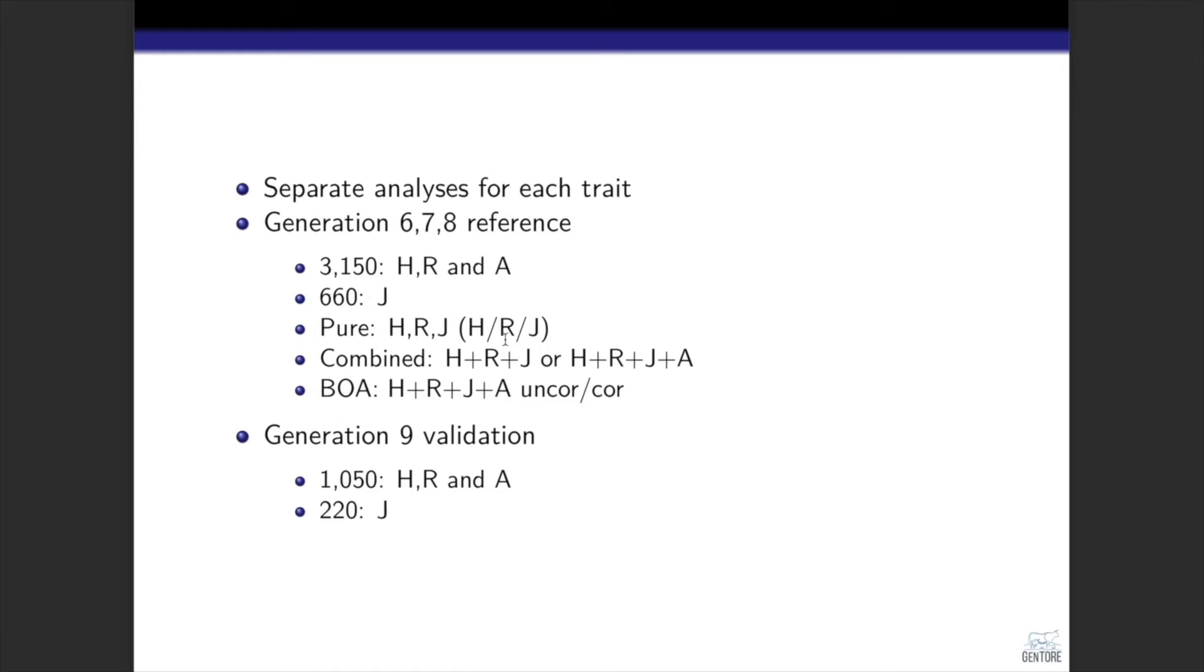The way we used data of these individuals can be classified in three groups. We can call them pure, combined, and breed origin of allele. In the pure, we estimated SNP effects separately within each pure breed. In the combined, we combined the data for pure breeds, or also combined the data for pure breeds and mixed individuals. In the breed origin of allele approach, we traced back the breed origin of each allele for all individuals.